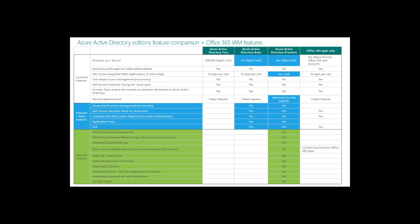Azure AD Premium also provides additional multi-factor authentication, Cloud App Discovery, connection health monitoring, and self-service group management — allowing users to create and manage their own security groups without IT involvement. Also, under single sign-on, Office 365 limits you to 10 applications per user, whereas the Premium version has no limit, which becomes important in the next step.